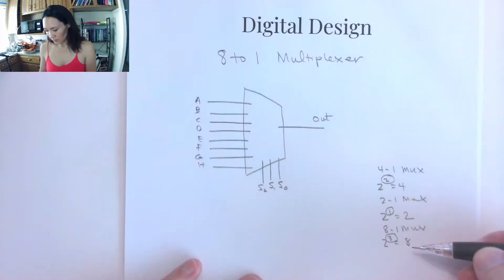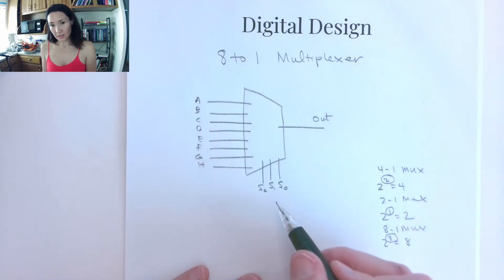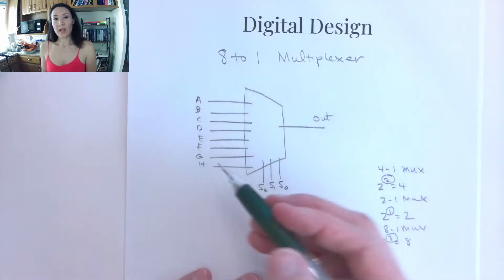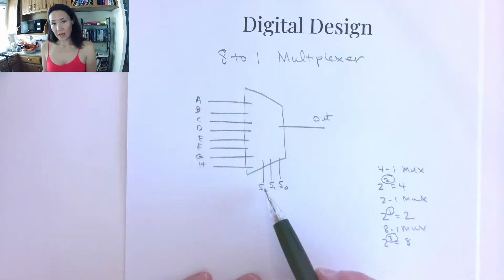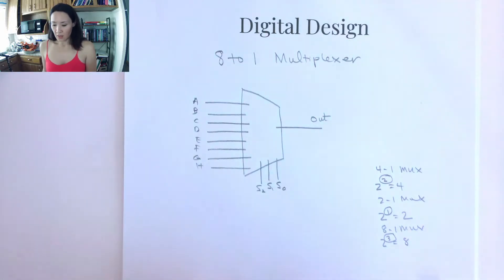So I just wanted to explain to you how we figure out how many select lines are needed down here. And it's basically, we have to be able to distinguish between 8 different cases here. So if we need to count between 8 distinct numbers, we're going to need 3 bits for that.